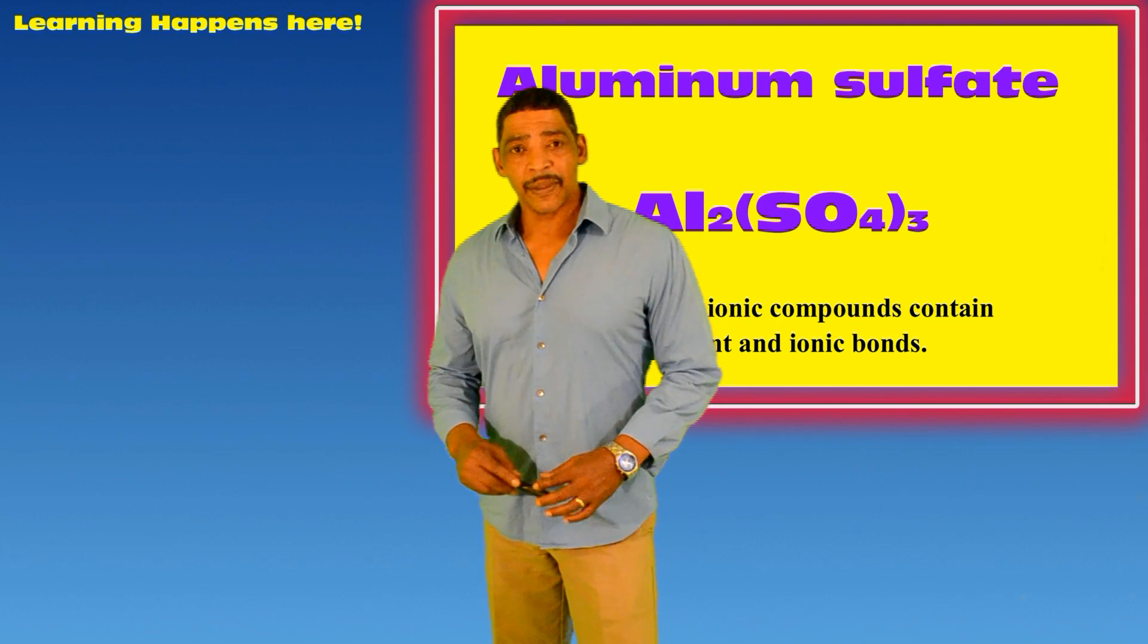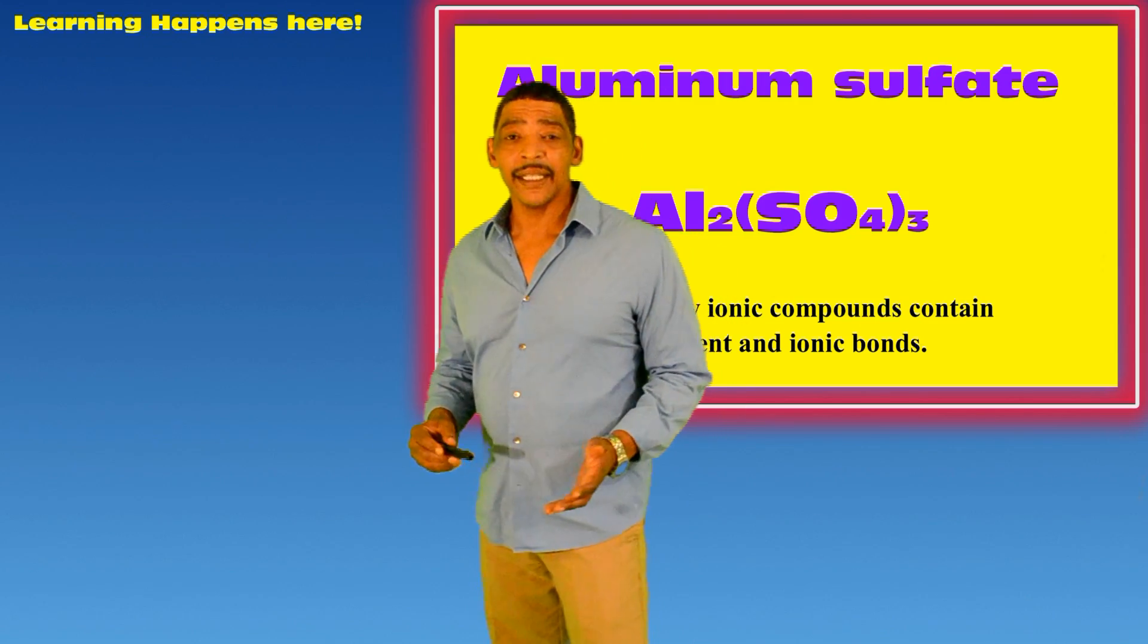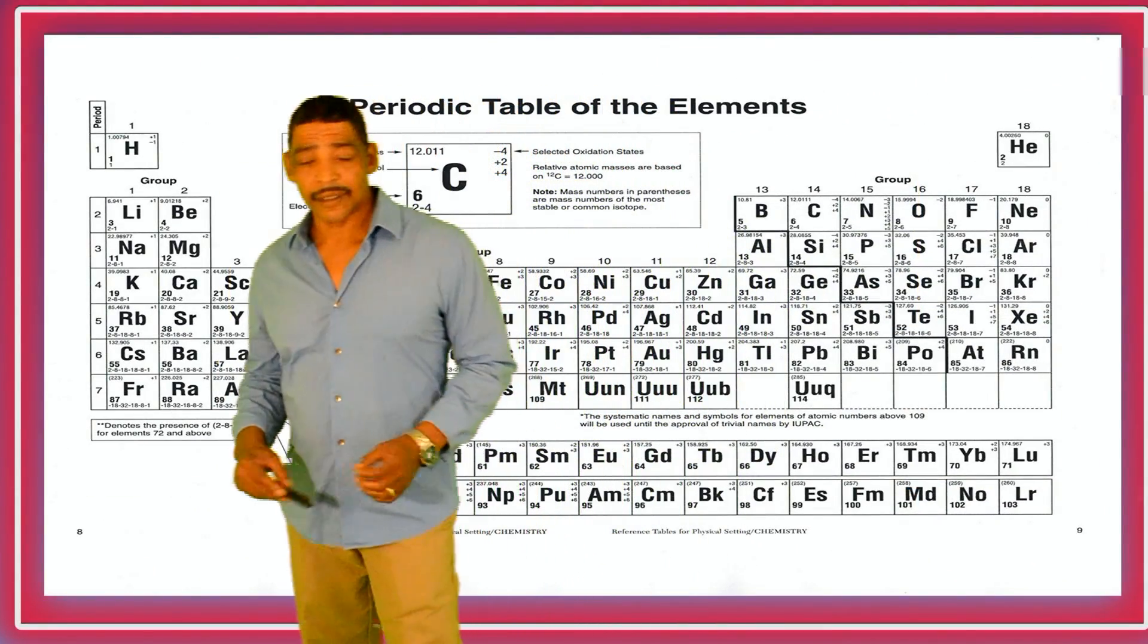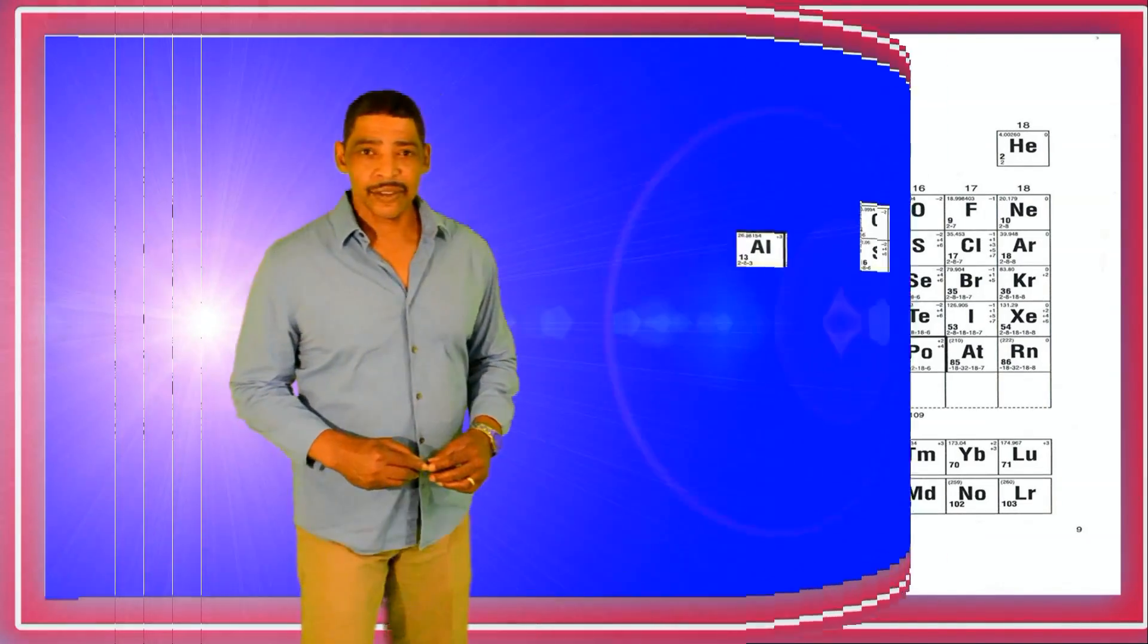The first step in determining the gram formula mass of this compound or any compound is to refer to the periodic table, where all three elements found in aluminum sulfate are written on the right side.